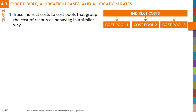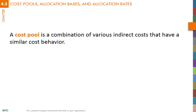The first step in a cost system is to assign indirect costs to cost pools. A cost pool is a combination of various indirect costs that have a similar cost behavior. Cost pools that include resources with very different behavior will likely lead to cost distortions. There are no hard rules on how many cost pools to use — it all depends on the cost system designer's ability and the desired accuracy of cost estimates.